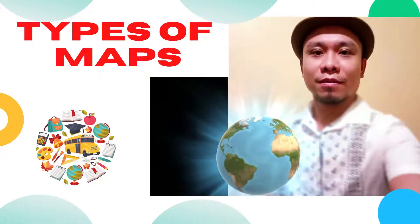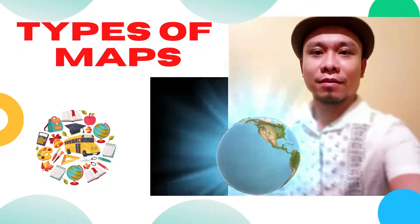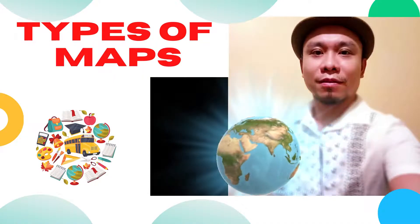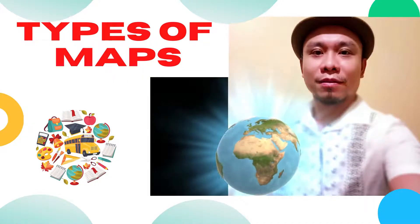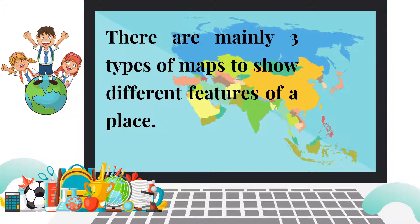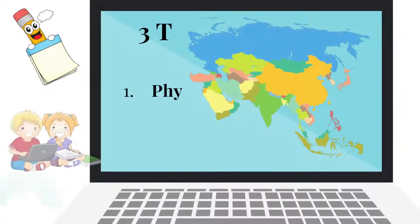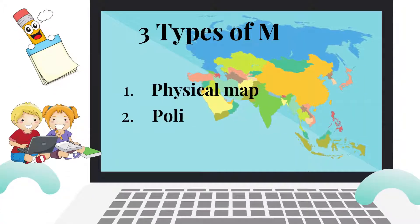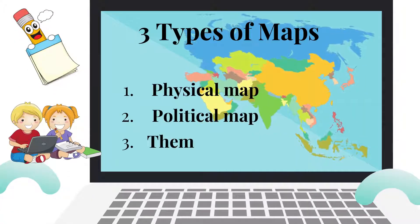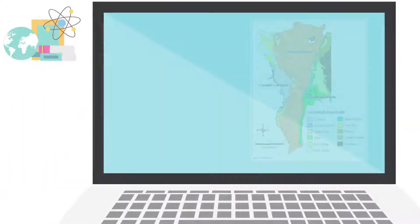Hi everyone, it's another fun time journey experience with iTeach Philippines. Today we are going to talk about types of maps. There are mainly three types of maps to show different features of a place, and here are the following: physical map, political map, and thematic map.